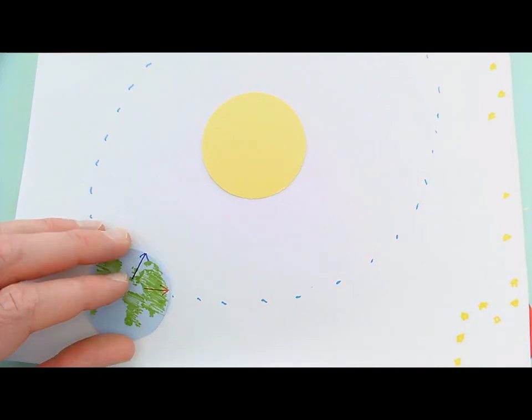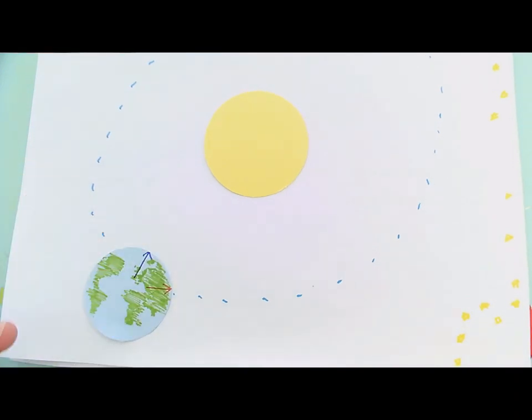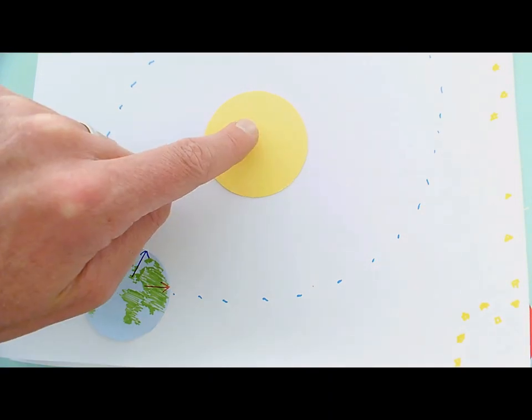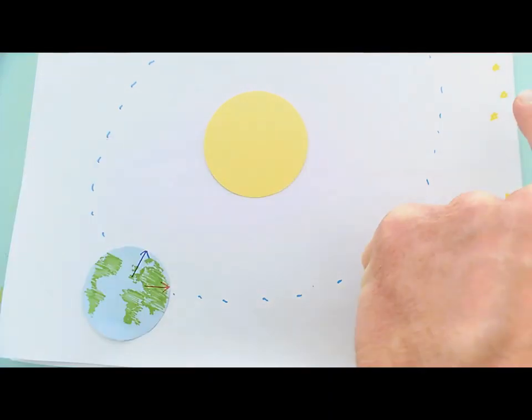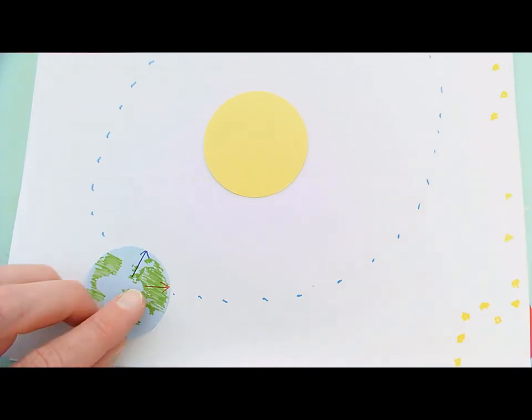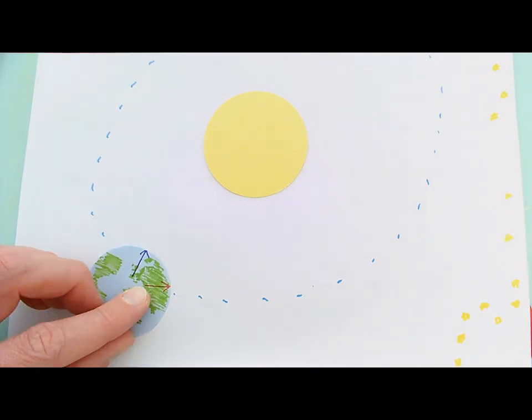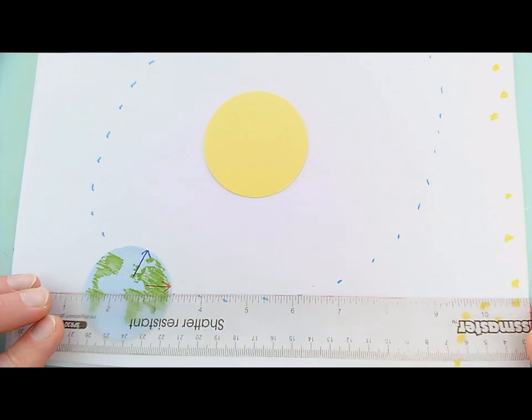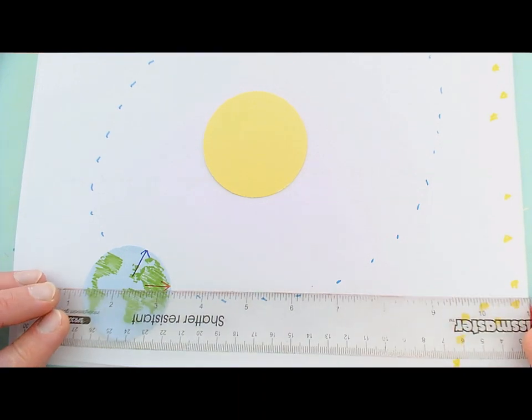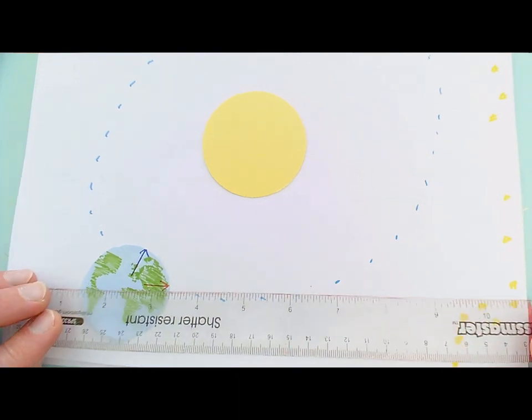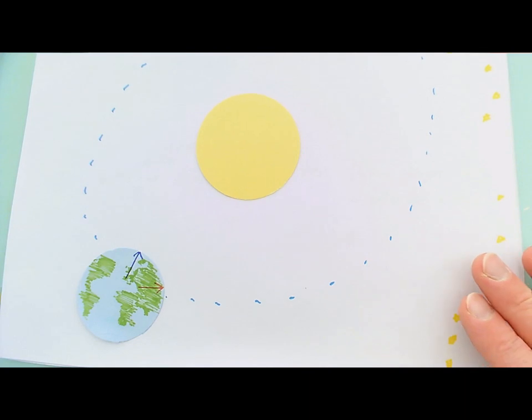We can look at that with this little demo here. So we've got earth, we've got the sun, and we've got distant stars down here. If we consider this person with the red arrow to start with and just have a look at where they're facing, they're facing the distant stars over here, straight off to the right of my page.